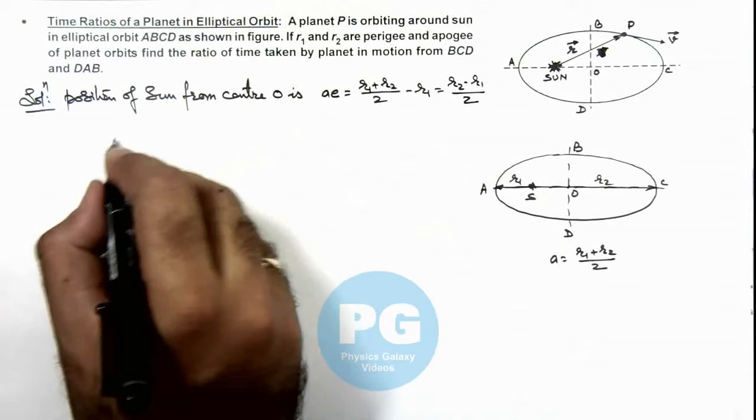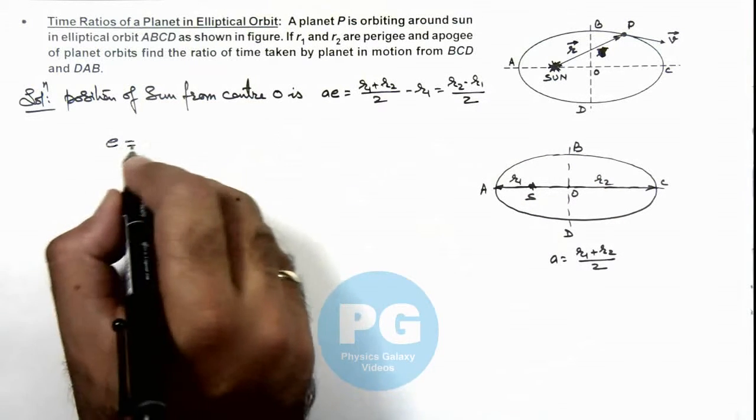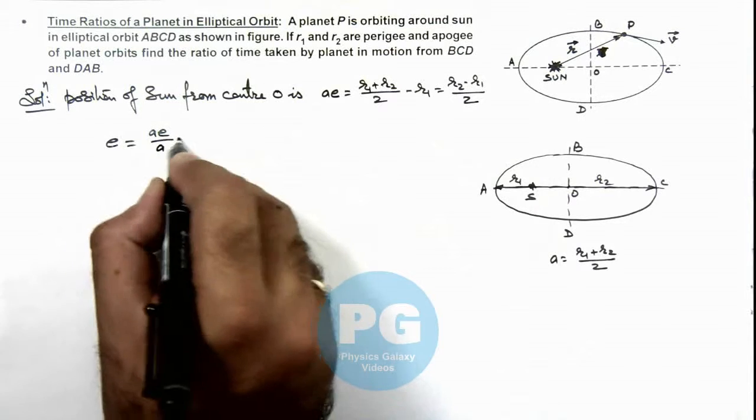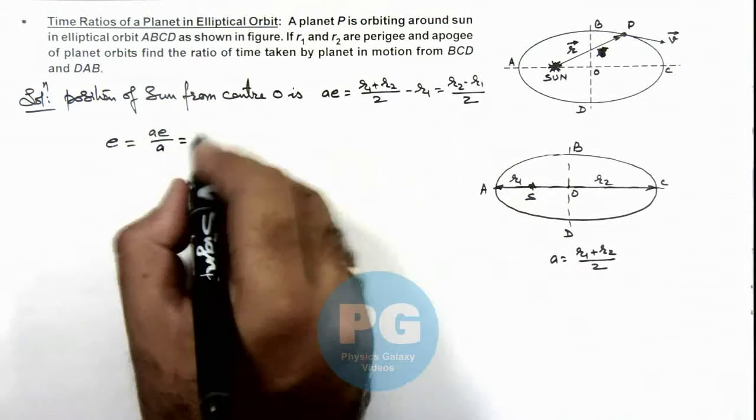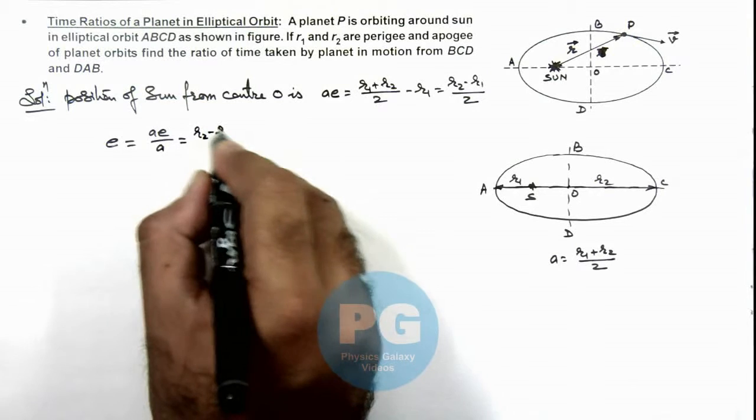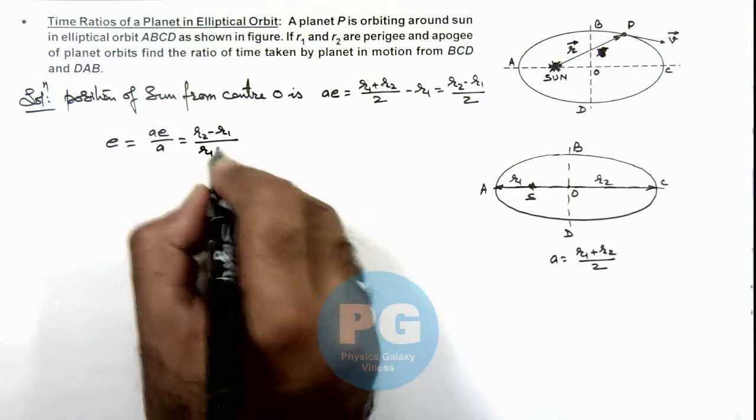So the value of eccentricity we can write as ae divided by a. So this we are getting as r2 minus r1 divided by r1 plus r2.